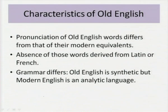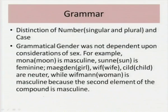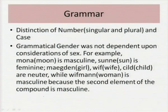There is also a difference in grammar. Old English is called synthetic while modern English is an analytical language. For grammar, there was a distinction of number — singular and plural — and case, and grammatical gender was not dependent upon considerations of sex. For example, 'mona' (moon) is masculine, sun is feminine, and 'mægden' (girl), 'wif' and child are neuter, while 'wifman' (woman) is masculine because the second element of the compound is masculine.